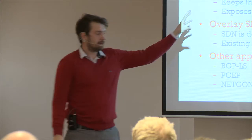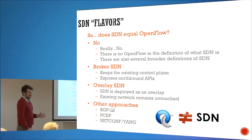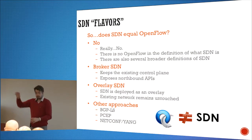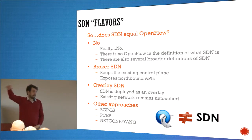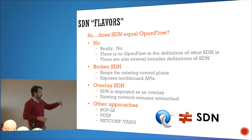Broker SDN would be having a wireless controller that has whatever it uses for the control plane — CAPWAP, whatever — exposing APIs to the application developers. That's broker SDN. Then you have overlay SDN, which basically says: let's keep everything the way it is, deploy a virtual network on top of that, treat that as SDN, have virtual devices and program those. That's called overlay SDN.